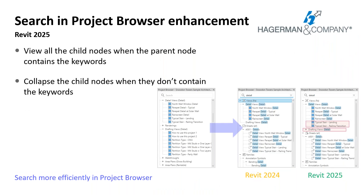Back inside regular Revit, when searching in your project browser, you can view all child nodes when the parent node contains the keywords. Users can get better search results when they cannot remember the exact words in child nodes. When the parent node contains the keywords and some child nodes also contain them, the search returns all child nodes under that parent. When the parent node contains the keywords but no child nodes do, the result lists all child nodes but collapses them. This makes searching more efficient and useful, especially when searching for families.